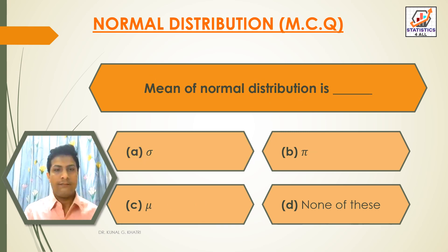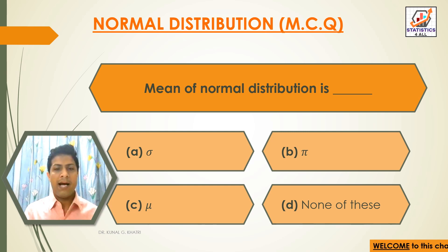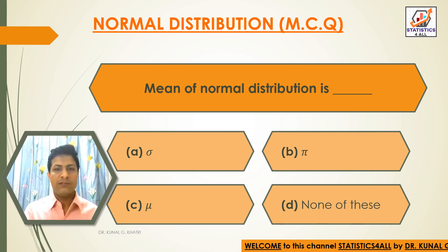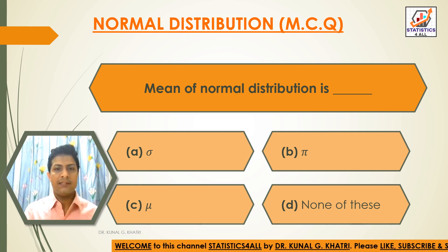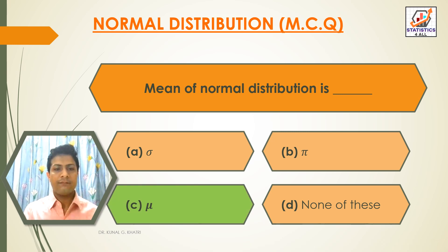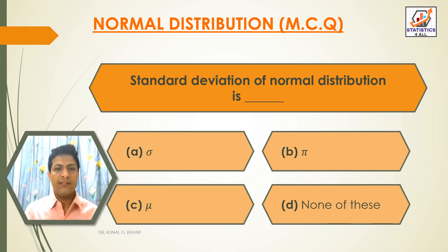Next question: Mean of normal distribution is — Option A: sigma. Option B: pi. Option C: mu. Option D: none of these. The answer is Option C — mu. The mean of normal distribution is mu.